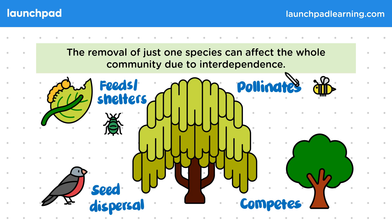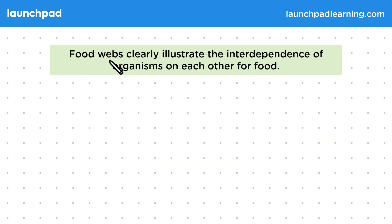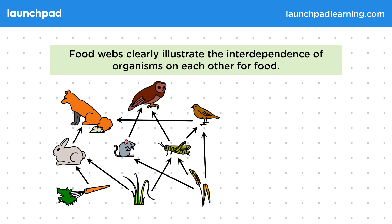So how do we visualise how organisms might be interdependent on each other for food? Food webs clearly illustrate the interdependence of organisms on each other for food, so we can study interdependence through a food web. This food web shows which organisms are eaten by which animal.